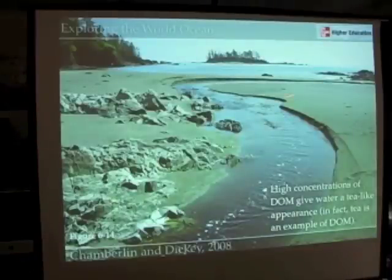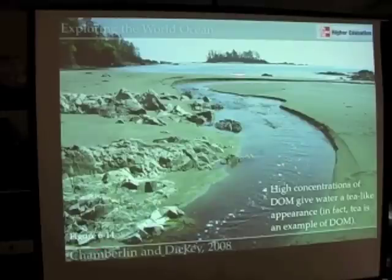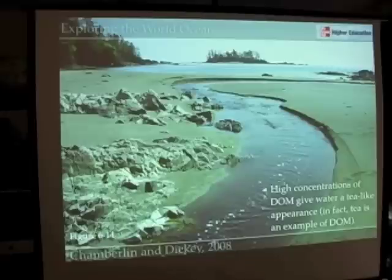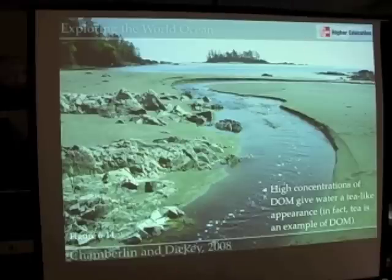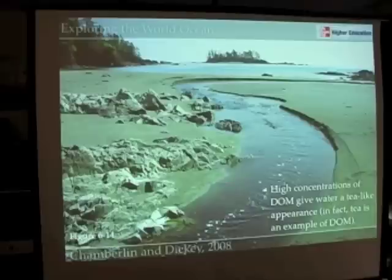Here's an example from a beach I hiked to on Vancouver Island in Canada — it took me a couple hours to get there. There was this river flowing out into the Pacific Ocean, and you can see this sort of tea-like color. This is also figure 6.14 in your book. This is dissolved organic matter flowing out into the ocean, and it's an important component of ocean chemistry for many reasons.